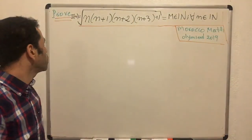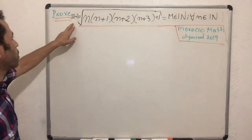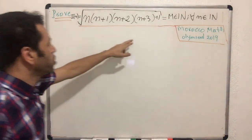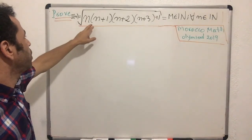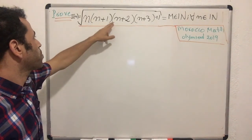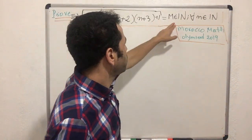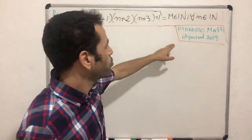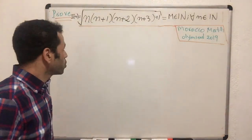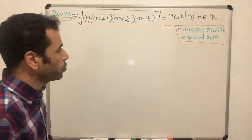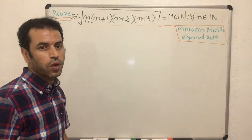Hi, welcome. In today's video I'm going to prove that i(n) is an integer number, where i(n) equals the square root of the product n times (n+1) times (n+2) times (n+3) plus one. This is a Morocco Math Olympiad 2019 problem, so pause if you'd like to try it yourself and keep watching to see how to solve it.